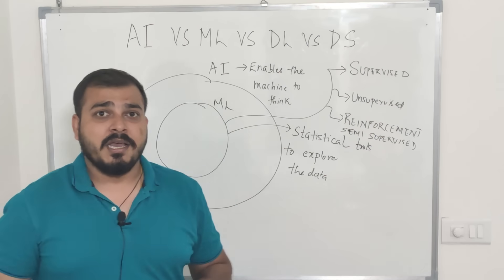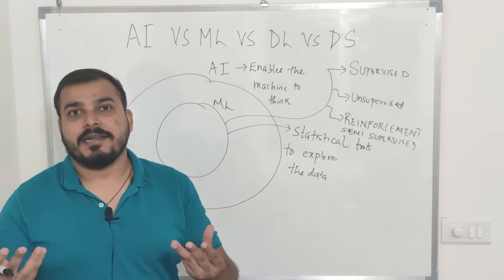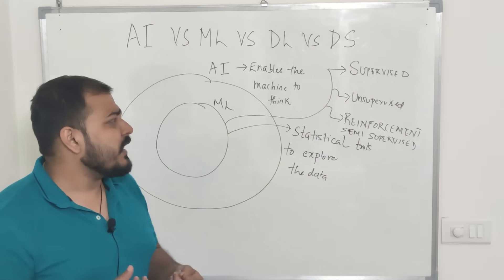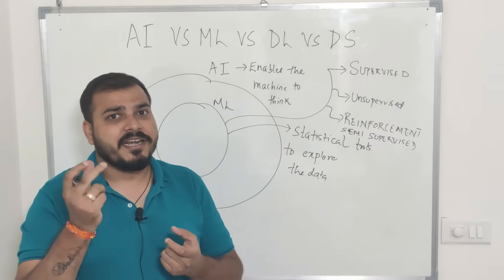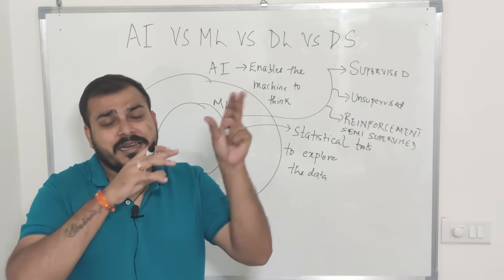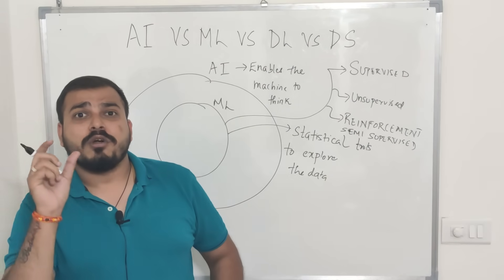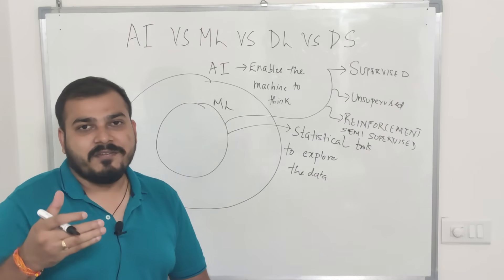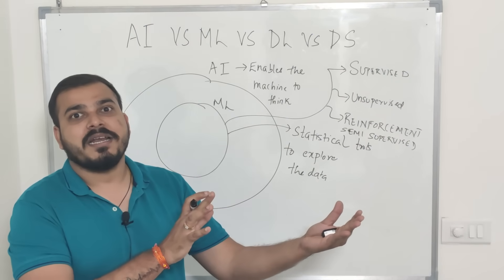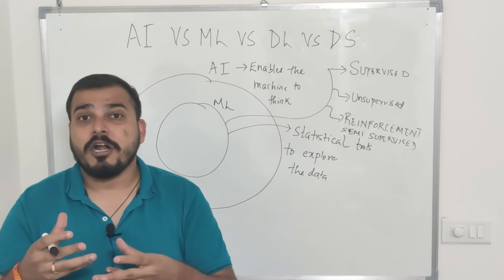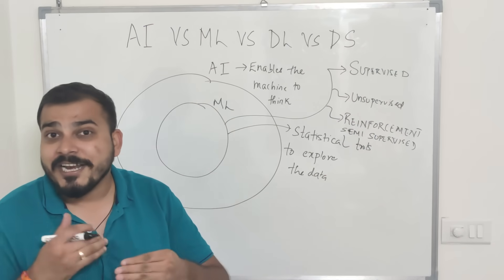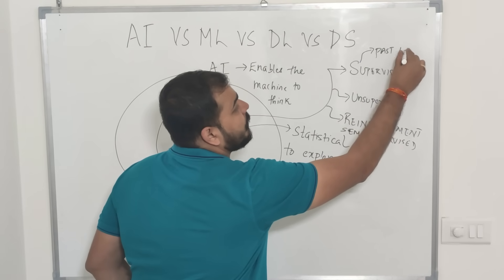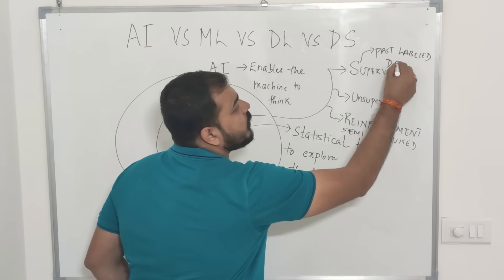In supervised learning, you will have some labeled data — some past data — and with this data you'll be able to make predictions for the future. For example, suppose I have two features in my dataset like height and weight, and I want to classify whether a person belongs to an obese category or a fit category. Initially, when making the model, I'll have this data in hand and train the model on it. So in supervised learning, we have past labeled data — we know what the output will be.